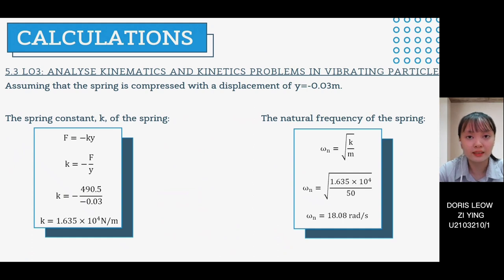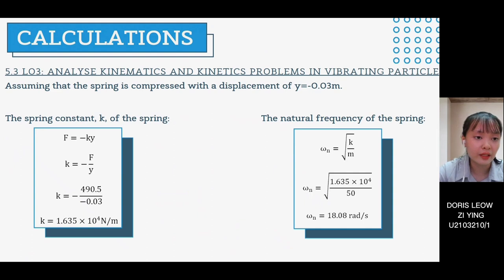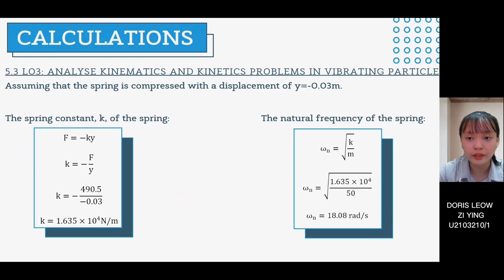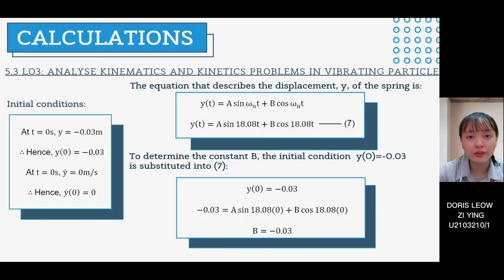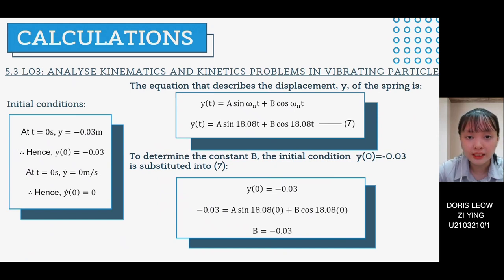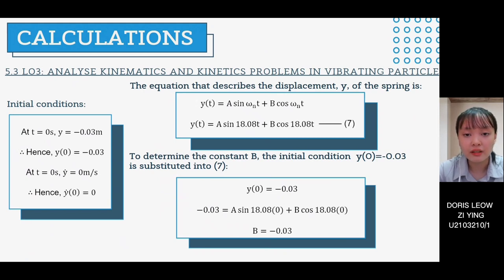From the spring compression, the spring constant is calculated, and then the natural frequency is determined using the spring constant value. To find the equation describing the motion of the spring, initial conditions are established. The general displacement equation is used; substituting the natural frequency gives equation 7. Substituting the initial condition into equation 7 determines the constant B.